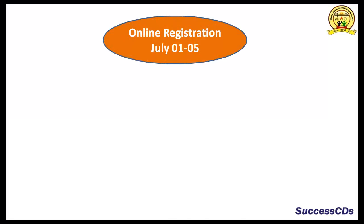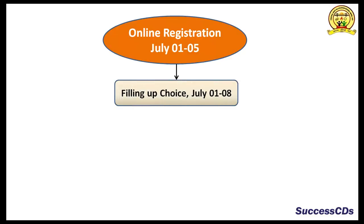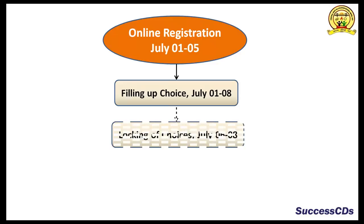The registration for CSAB is already started from July 1st and will be on till July 5th. Once you are registered, you can fill up your choice online through the CSAB website till July 8th and lock your choices between July 6th and July 8th.